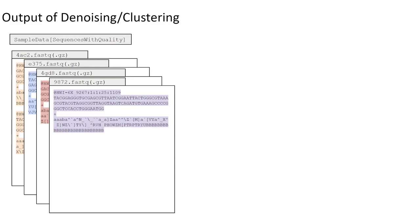Picking up where we left off from the last video, after importing and demultiplexing our sequences, here we have a sample data artifact which contains a series of per-sample FASTQ files. Following the denoising and/or clustering step, which we will discuss in more detail in a bit, we will be provided with two new very important artifacts.